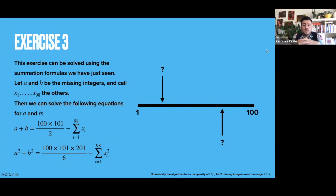If I have just one missing integer, what can I do? I can just apply the formula of Gauss. So the missing integer can be found by taking 100 times 101 divided by 2 minus the sum of the other 99 integers.